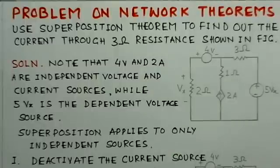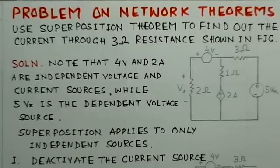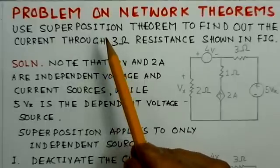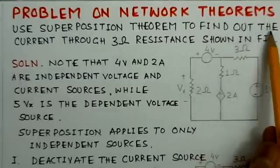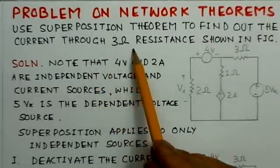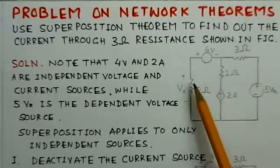The first problem here is not a GATE problem but a very good problem covering most of the aspects related to the concerned topic. This is a problem on network theorems. The problem is: use superposition theorem to find the current through 3 ohm resistance shown in the figure. The circuit diagram is given here.